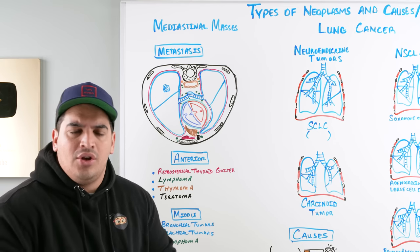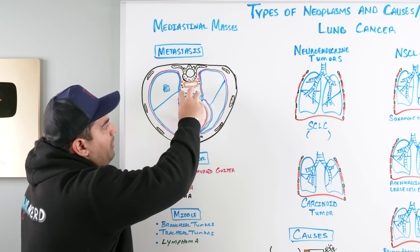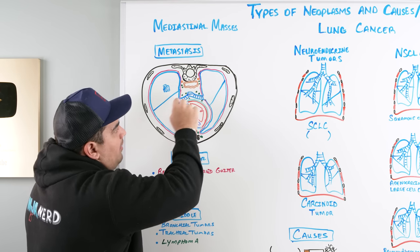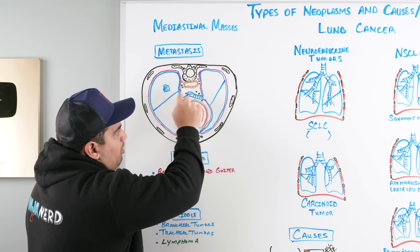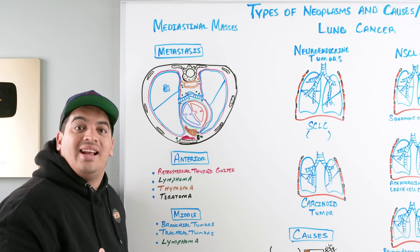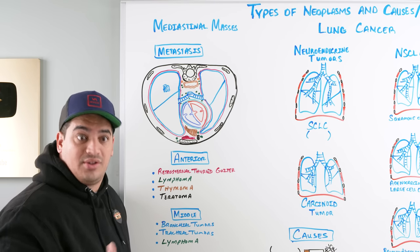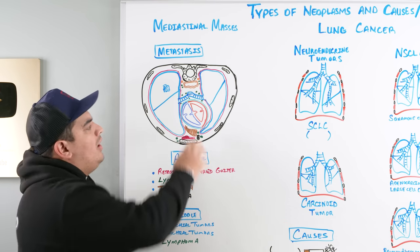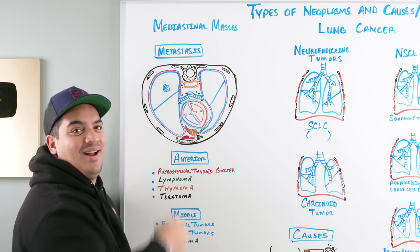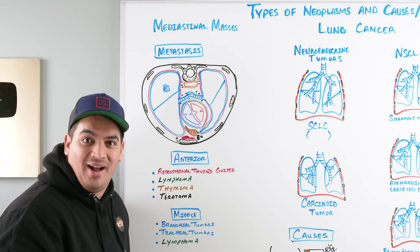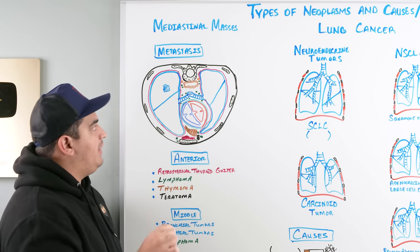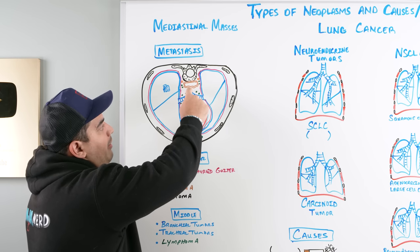The middle mediastinum runs from the anterior pericardium to where the trachea bifurcates into the primary bronchi. Structures here that can develop tumors include the trachea, bronchi, and lymph node tissue. So think about tracheal tumors, bronchial tumors, and lymphoma in the middle mediastinum.